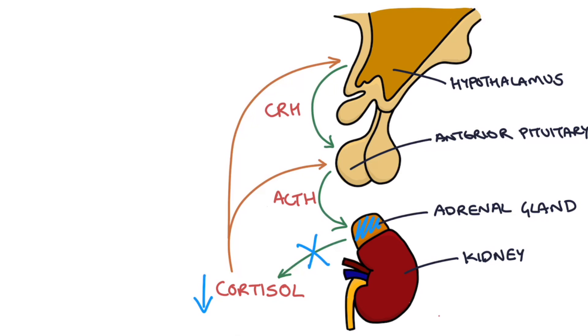Because the cortisol is low, you don't get the negative feedback to the hypothalamus and anterior pituitary, so you would expect the anterior pituitary to produce extra ACTH to try to stimulate the adrenal gland, so you would find a high ACTH level.